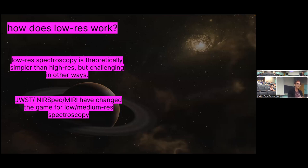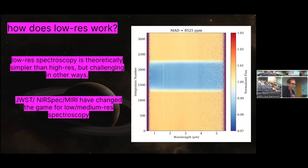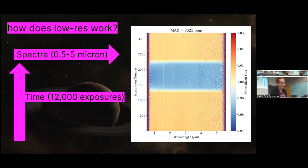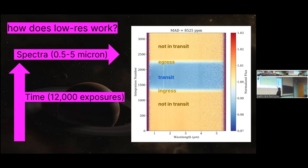Low res is theoretically simpler than high res, but challenging in other ways — you have to know about the star for low res to work. JWST's NIRSpec instrument is really changing the game with low res right now. On the x-axis we have a spectrum, and we have about 3,000 of those spectra with features normalized out — spectra go one way, time goes the other. You can see all this time where the planet's not transiting, then ingress, then the transit itself where the transit depth is about 0.98 — so a 2% transit — then egress.